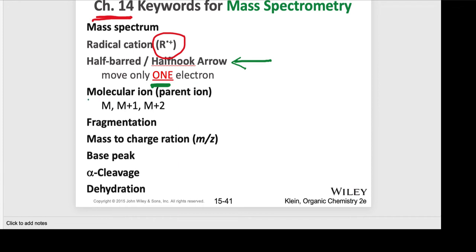The other thing that we're discussing are molecular ions, or parent ions, and there are different terminologies. There's M, and then because there are isotopes for certain atoms, we also are dealing with M plus 1 and M plus 2. In the spectrophotometer, we only detect the cations, not the radicals.